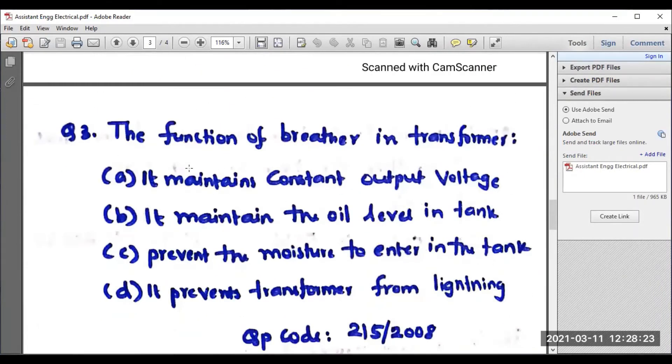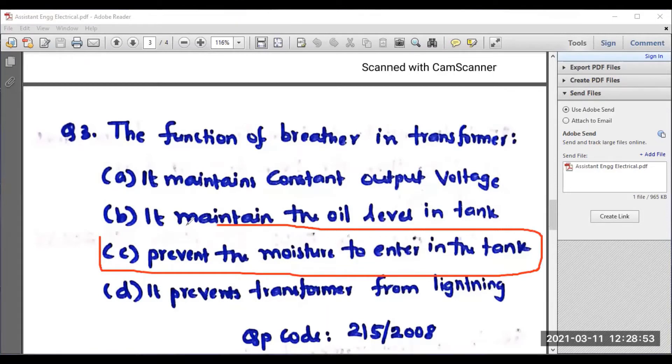Question number three: The function of breather in transformer. Option A, it maintains constant output voltage. It maintains oil level in the tank. Prevents moisture to enter the tank. It prevents transformer from lightning. Option A is totally incorrect. Option B is also incorrect. Option D is also absolutely incorrect. From among this option, prevent the moisture to enter the tank is the right answer, which is related to breather.